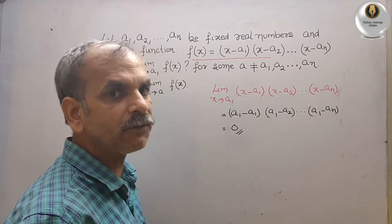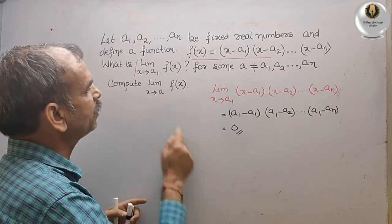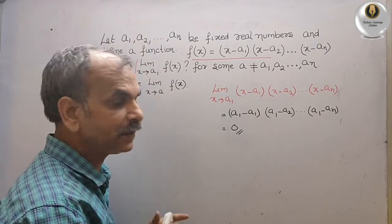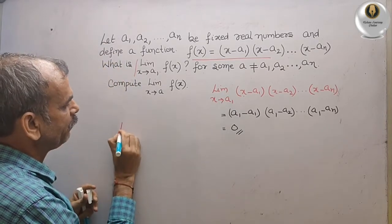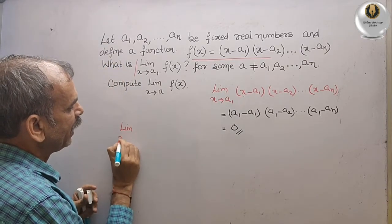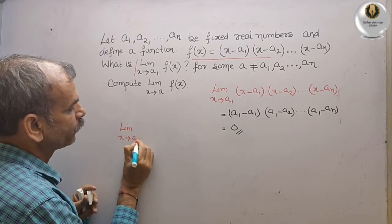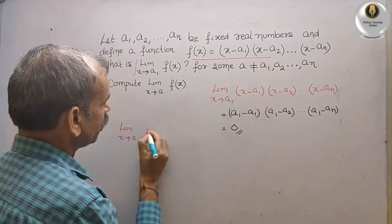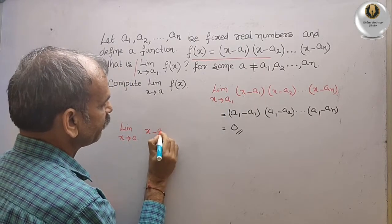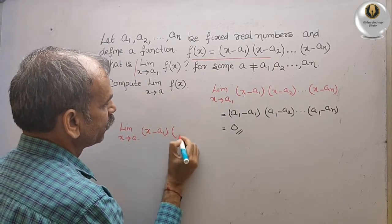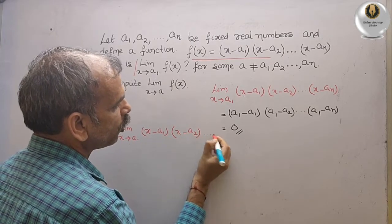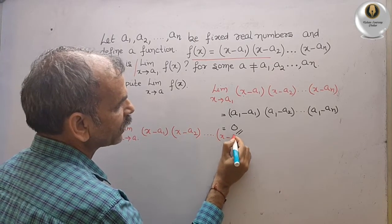Second, what they have given? They have given limit x tends to a of f(x). That means we will write here limit x tends to a and f(x). f(x) is same: that is your (x minus a1)(x minus a2), so on up to (x minus an).